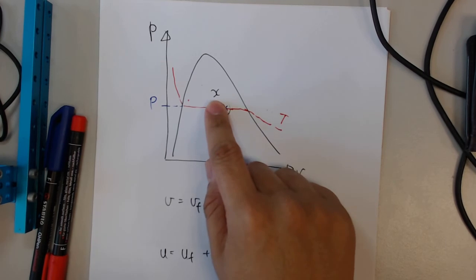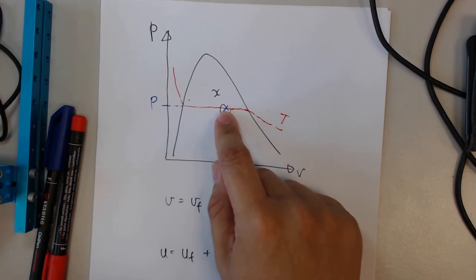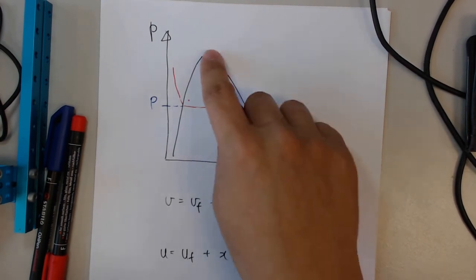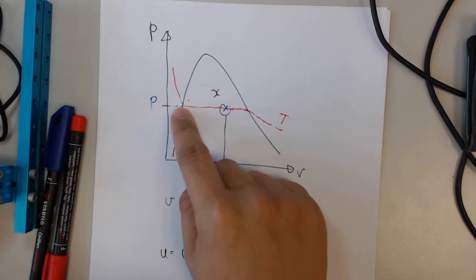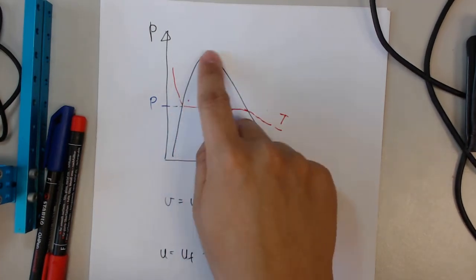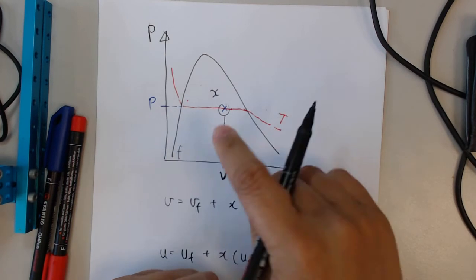You will have a certain dryness fraction of your steam. So for example, if your steam happens to be on the left-hand side of the hill, you will be along the F line, the saturated liquid line.